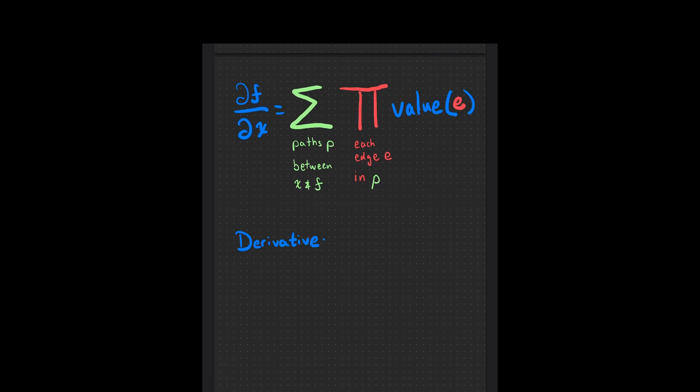Let me say that again, because this is really important. To compute the gradient of f with respect to an input, you look at a path from the input to the output, and you multiply all the edge weights of the path together. Then you do that for every path between input and output, and add it all up. It's a sum of products.